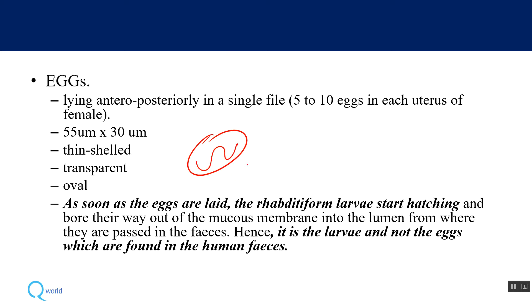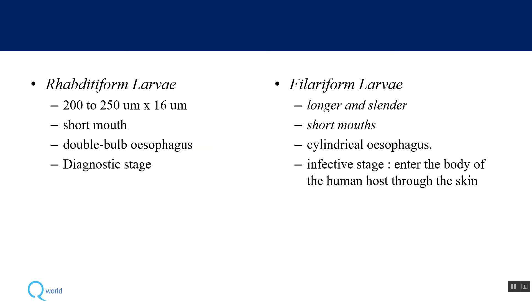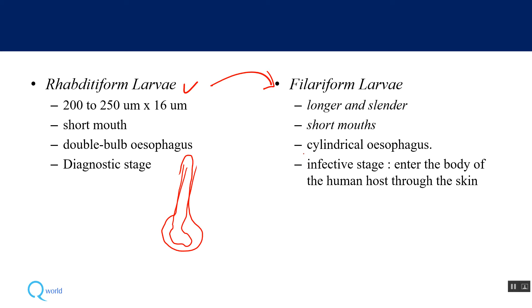As soon as eggs are laid, the rhabditiform larvae hatch out immediately, so it is the larvae — not the eggs — which are usually found in human feces. Initially, these larvae are rhabditiform, but later they convert to filariform larvae. The rhabditiform larva is shorter, with its posterior end dilated like a bulb, and its esophagus is also dilated.